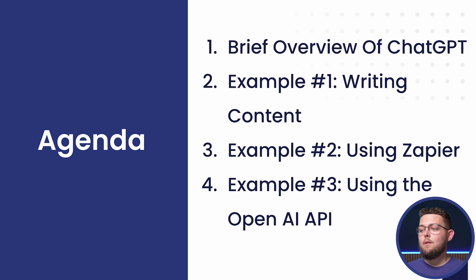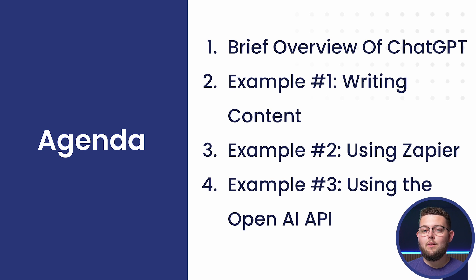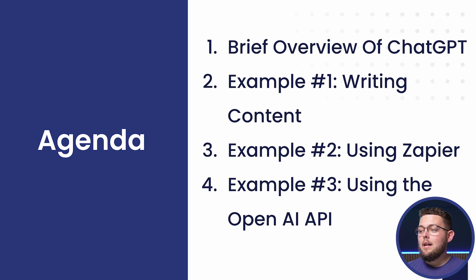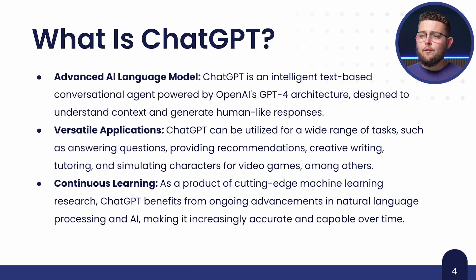First we'll give a brief overview of ChatGPT for those who missed the last webinar, then we'll go through three separate examples. The first is how to write content — specifically a tenant welcome letter, since many of you are in the real estate sector. The second is using Zapier to automate that process and save you even more time. The third, and most complicated, is how to use the OpenAI API.